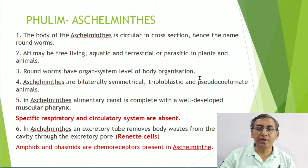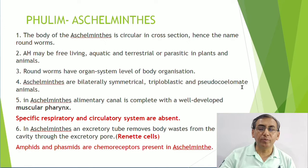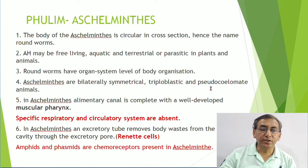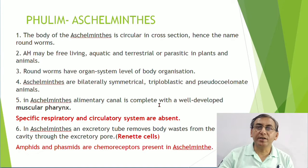Aschelminthes have organ system level of organization. They are bilaterally symmetrical - starting from Platyhelminthes and up, all are triploblastic. Aschelminthes are pseudocoelomate. The mesoderm is present in the form of scattered patches, so they are pseudocoelomate animals.